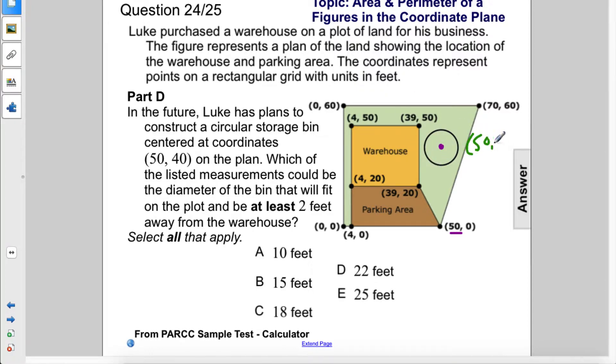So this is at point (50, 40). This length here from 50 to 39 is 11. But that does not leave two feet of room. So really, the longest that this radius can be is nine, because that would leave two extra feet to get to the warehouse. If the radius is nine, that means the diameter would be 18.